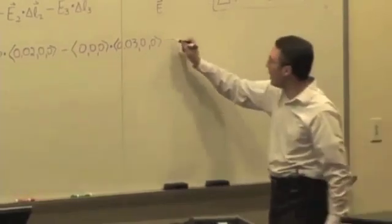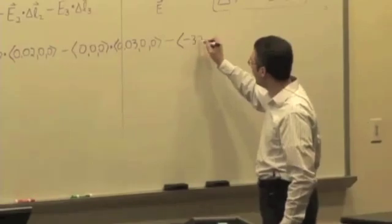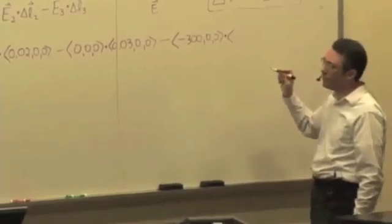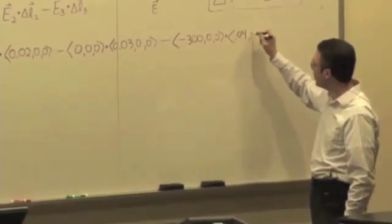Negative 300 x-hat, so we have a minus, negative 300 x-hat dotted with 0.04, positive 0.04 x-hat.